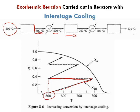We then introduce the mixture to the second stage where conversion starts at that same level and increases further, with temperature also rising adiabatically. Again, right before hitting the equilibrium conversion line, we stop the reactor and take the mixture through another heat exchanger, cooling it back down to 500 degrees C. Then we introduce it to the third stage, where again the conversion increases as we have catalyst and the temperature rises.